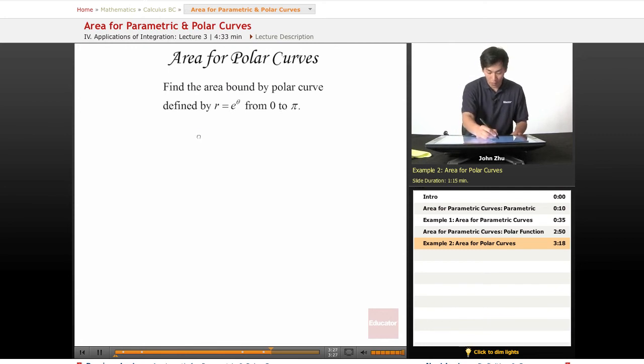we just remember our formula: A equals one-half integral from 0 to pi of e to the theta squared, which is e to the 2 theta d theta.